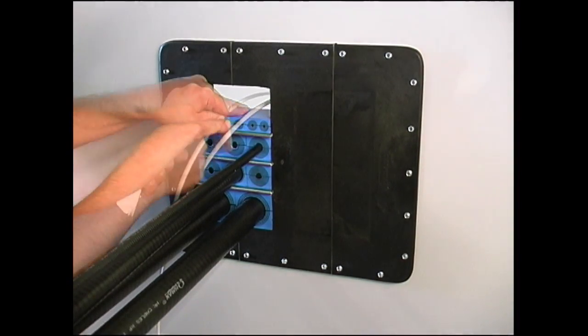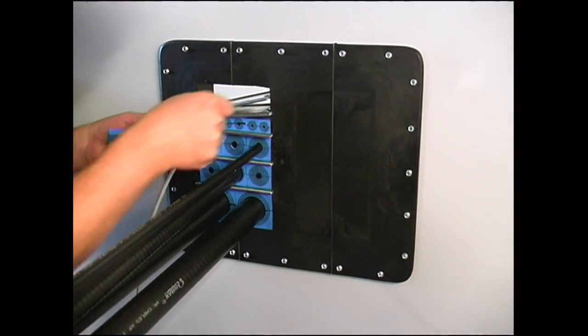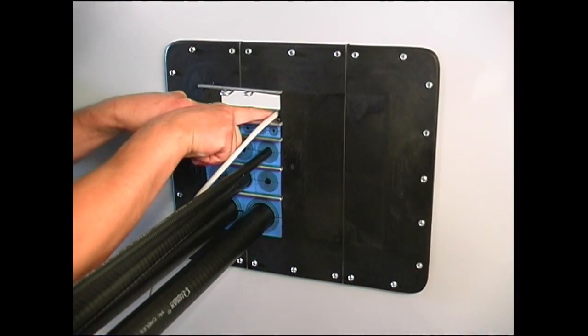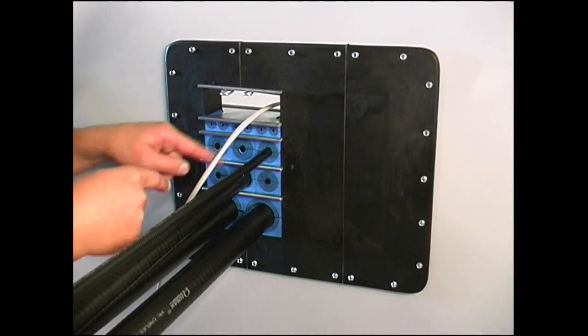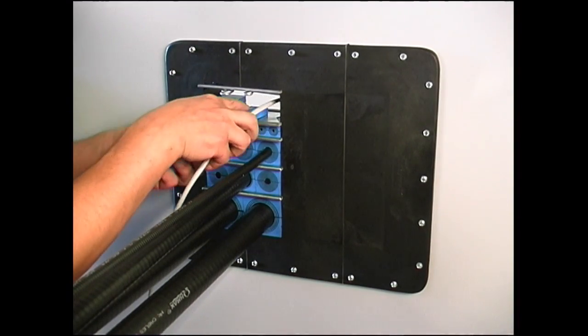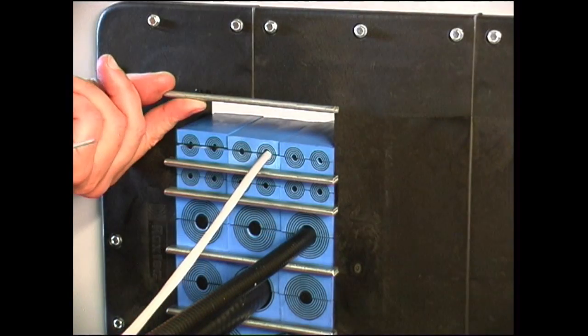Before installing the final row of modules, it is necessary to insert the two remaining stay plates. The stay plate clip provides convenient help during installation. Attach the clip below the top stay plate and it will be kept out of the way during installation. Install the final row of modules between the stay plates.